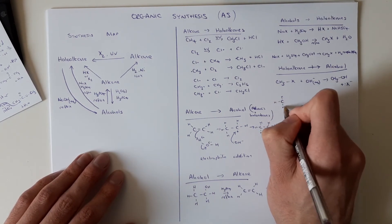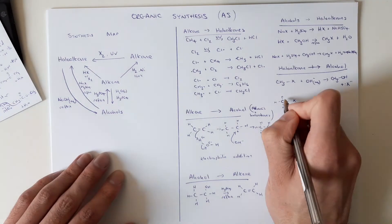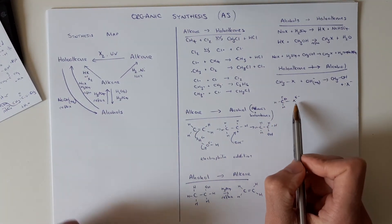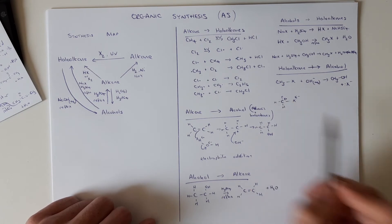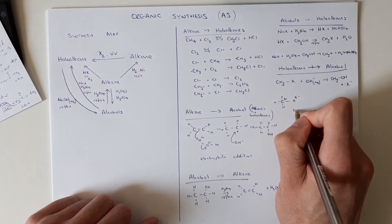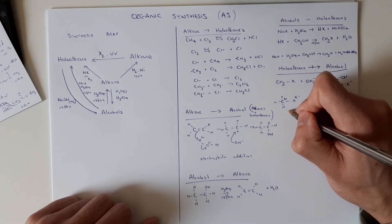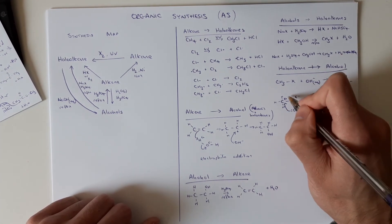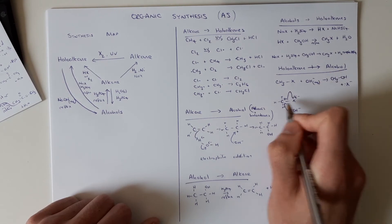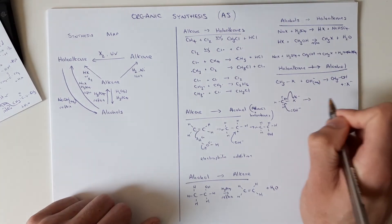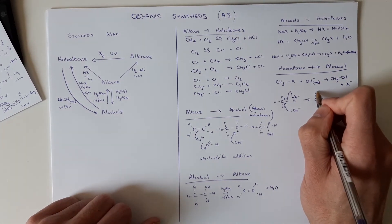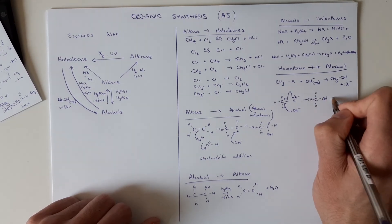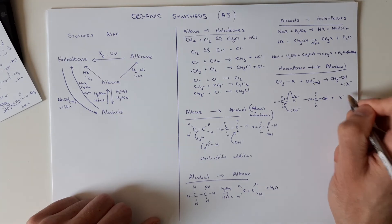So do that quickly on here. We've got C3H7X, delta positive carbon, delta negative halogen, because halogen is more electronegative than carbon. Our OH minus then acts as a nucleophile and attacks. So curly arrow from the lone pair and the bond between the carbon and that halogen breaks to give you your C3H7OH plus X minus.